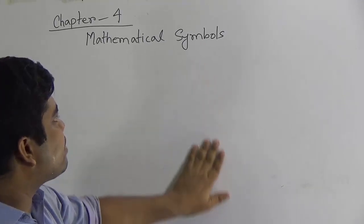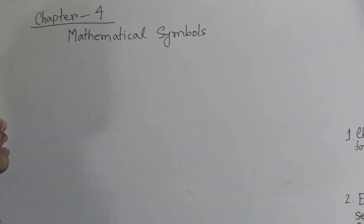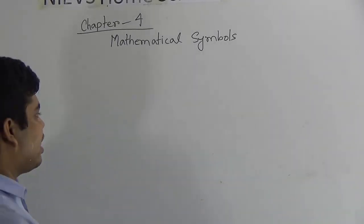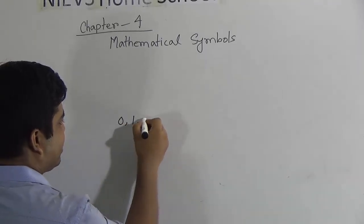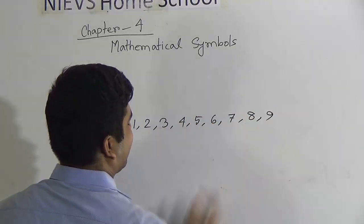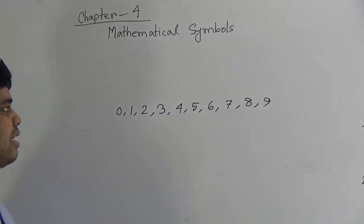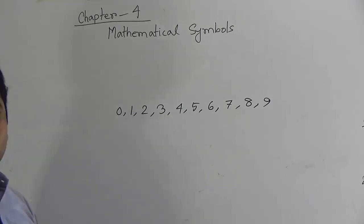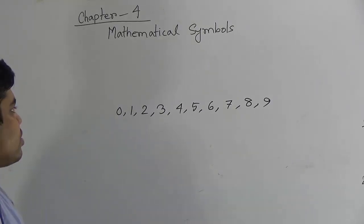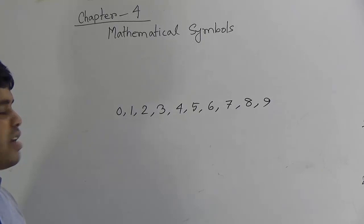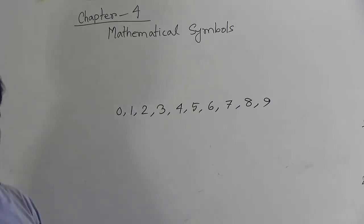The name of the chapter is Mathematical Symbol. At first I ask you a question: how many numeric digits are there in the number system? There are 10 — that means 0, 1, 2, 3, 4, 5, 6, 7, 8, and 9. So there are 10 digits in mathematics. By using these digits, we shall make all the numbers. If a short question comes in your annual examination — how many digits are there in the number system — the answer will be 10.